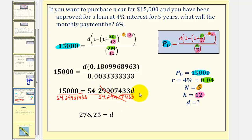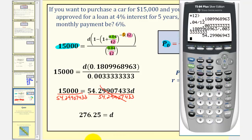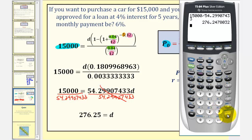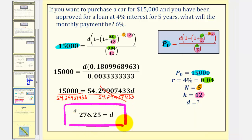So we have just D on the right side, and now we'll find this quotient to find the monthly payment. So we'd have 15,000 divided by 54.29907433. Rounded to the nearest cent, this gives us the monthly payment would be two hundred seventy-six dollars and twenty-five cents. I hope you found this lesson helpful.